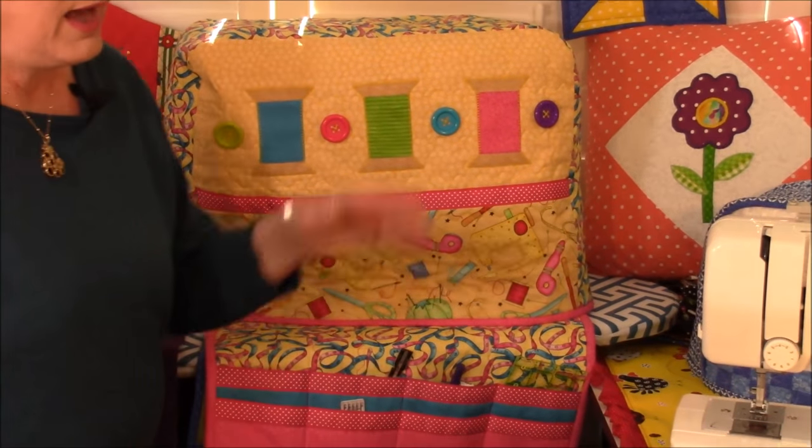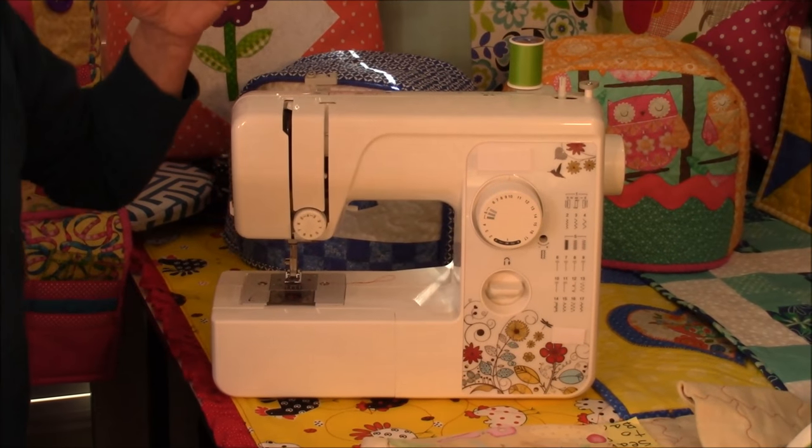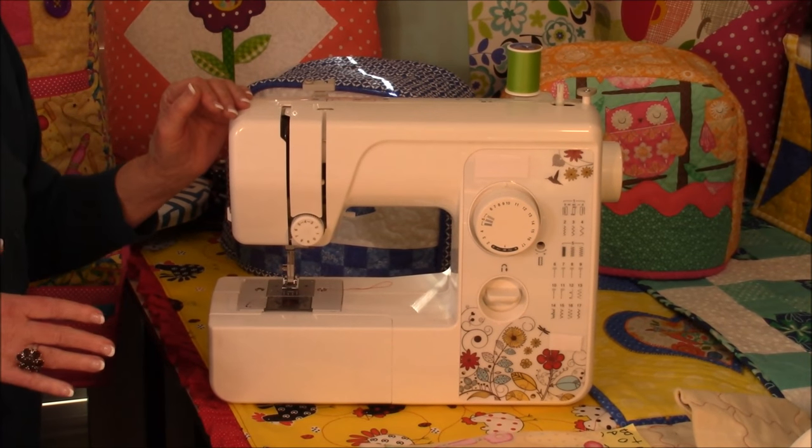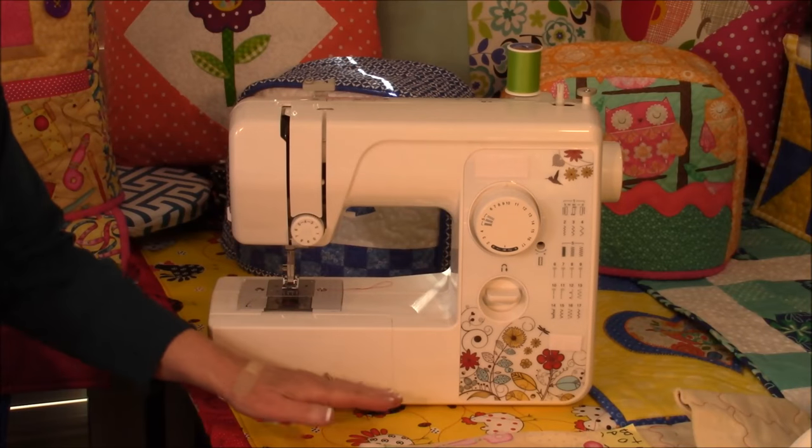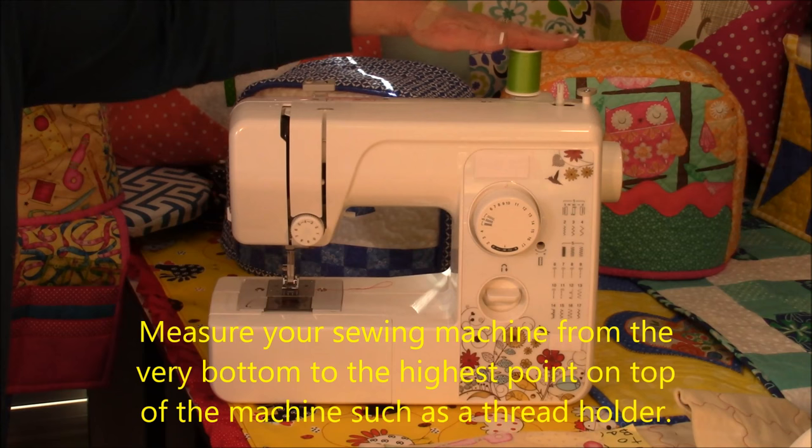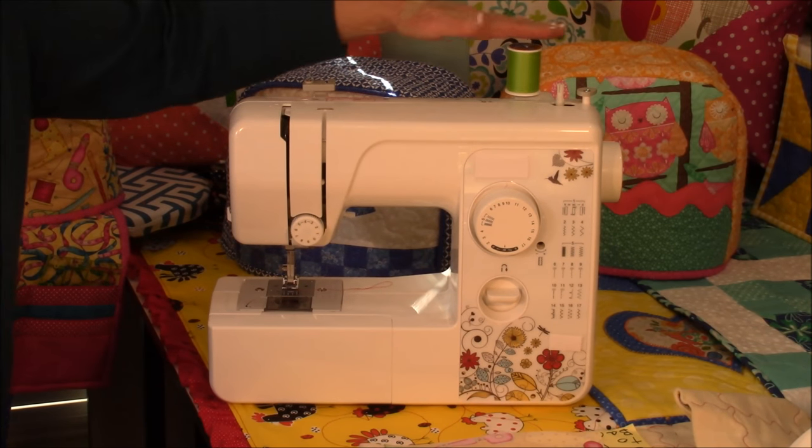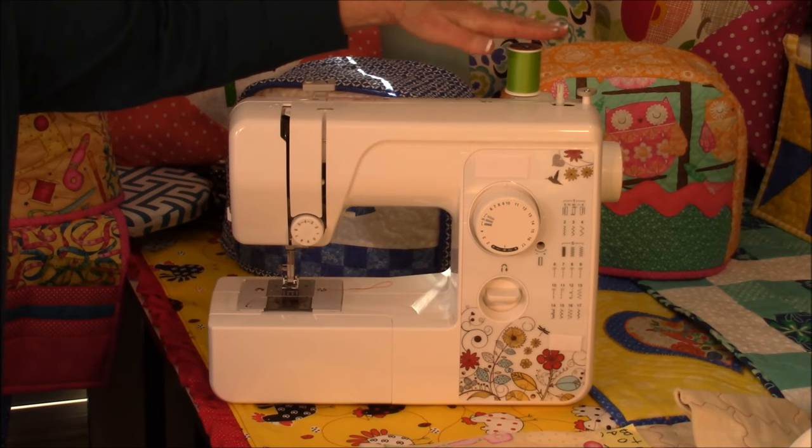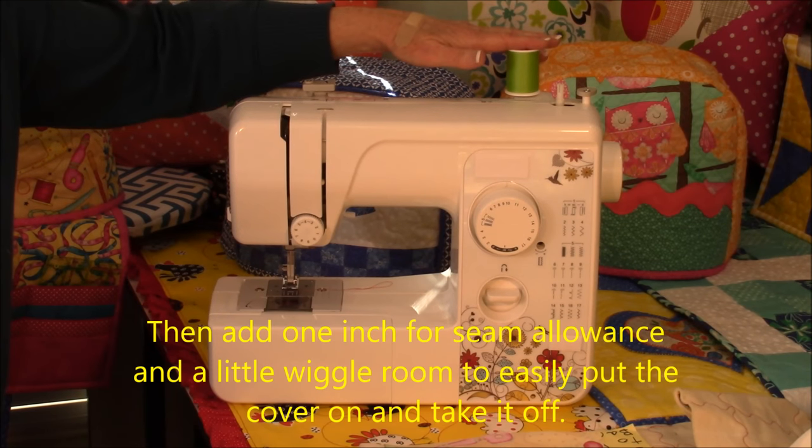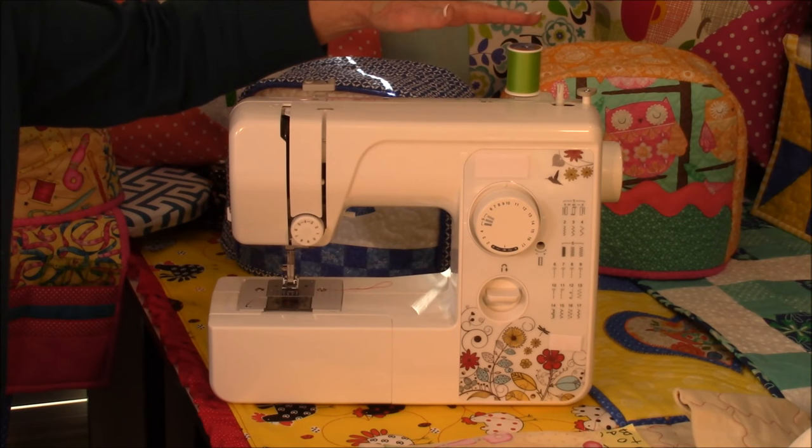Alright, let's go over how to measure your machine because this may not fit your machine. So you're going to need to measure your machine and make adjustments accordingly. When measuring, you want to measure from the very bottom of the machine to the very top of the machine. That includes any dials or spool holders, whatever is up here. Whatever is the highest point, that's your height. Then you want to add one inch for some seam allowance and a little extra wiggle room.